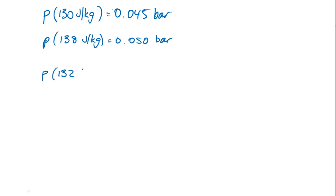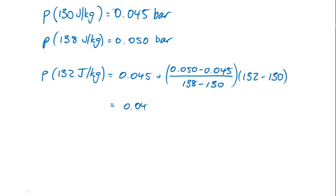Substituting those two values into our equation that we derived earlier, we can directly calculate what is the saturation pressure of 132 joules per kilogram. It's 0.045 plus the slope of the line multiplied by the difference x minus x1. If we calculate that, we get 0.04625 bar.